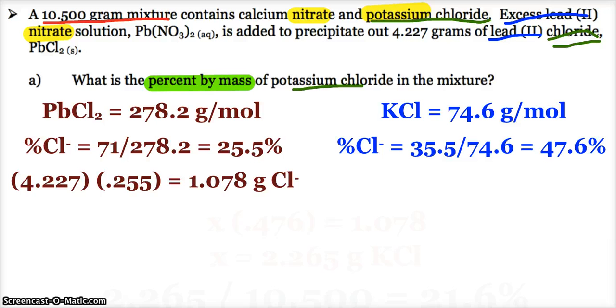And so now, put your thinking caps on. Pause the video if you'd like. Try to figure out a link between those two pieces of information. Again, all of my chloride in my precipitate, which is 1.078 grams, came from the potassium chloride. And that potassium chloride has a percent chloride of 47.6. Did you find the link?